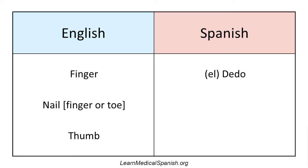Dedo is the same word for finger or toe — you can think of it as meaning a digit. The next one is nail, as in fingernail or toenail: la uña. How would you make that plural? You would say las uñas. How about thumb? El pulgar. This one's always a little tricky to remember because it's similar to the word for inch, which is pulgada — but pulgar means thumb and pulgada means inch.